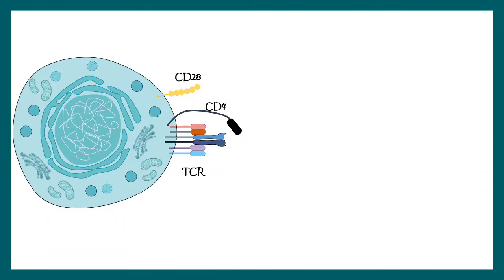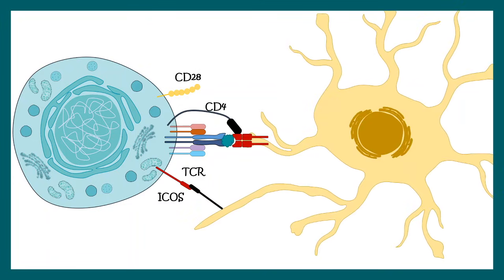In T cells, CD28 is not the only co-stimulatory receptor. Along with CD28, ICOS is another co-stimulatory receptor. ICOS can interact with the ICOS ligand present on activated dendritic cells.